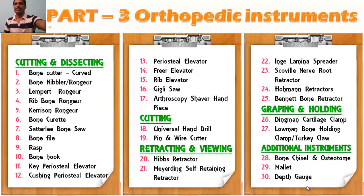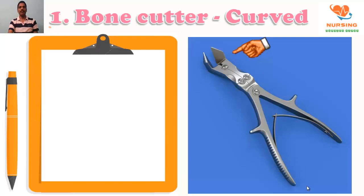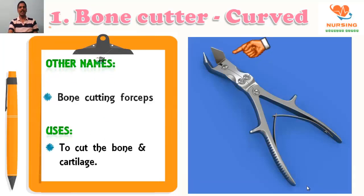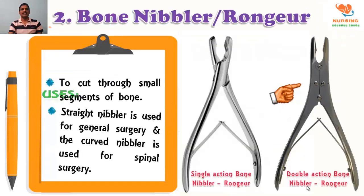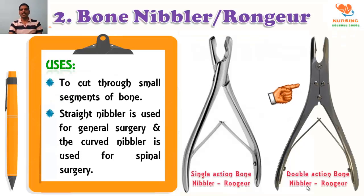Cutting and dissecting: bone cutter, curved type — another name is bone biter or bone cutting forceps — used to cut the bone and cartilages. Bone rongeur, used to cut through the small segment of the bone. The straight rongeur is used for general surgery and the curved rongeur is used for spinal surgery.